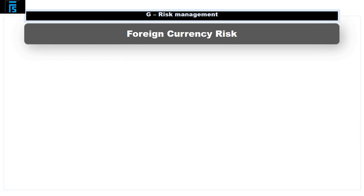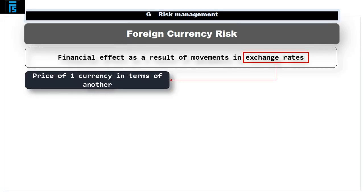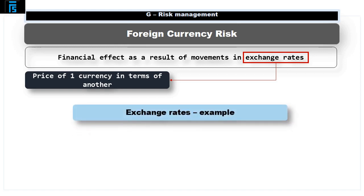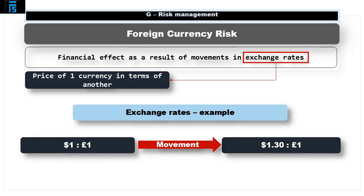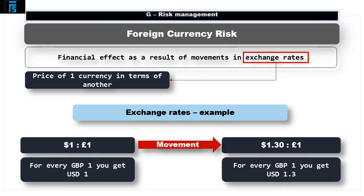Foreign currency risk includes the way we are financially affected as a result of movements in exchange rates. An exchange rate is simply the price of one currency in terms of another. For example, an exchange rate may move from $1 to £1 to $1.30 to £1. This would mean that anyone who exports from the USA to the UK used to get $1 for every pound of export revenue, whereas they are now getting $1.30 for every pound of export revenue.